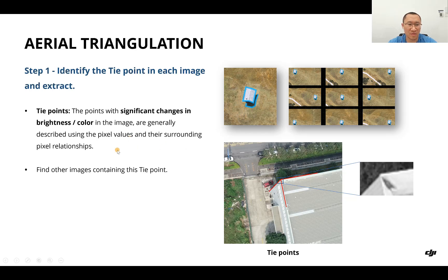They are generally described using the pixel values and their surrounding pixel relationships. For example, in this image, this building definitely has a different outlook or color with its surroundings. We could see this building as a tie point, and this tie point might show in many images.